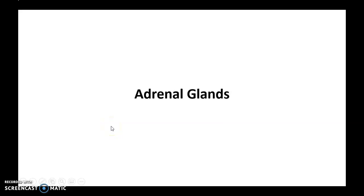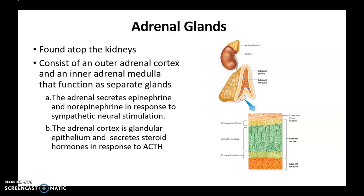Moving on to adrenal glands. We will focus on the picture on the right-hand side. Here we have the kidneys, and on top of the kidneys we have this triangular gland — these are called adrenal glands. If you make a sagittal section of the adrenal gland, you see an inner medulla in orange color and an outer cortex.